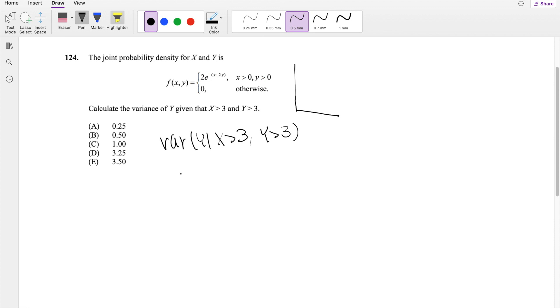And also, we know that for independent functions, f of x, y is equal to f of x, the marginal function of x times the marginal function of y. If we set f of x equal to 1e to the negative x and f of y equal to 2e to the negative 2y, we know that when you multiply f of x times f of y, you do indeed get 2e to the negative x minus 2y, which is indeed equal to f of x, y. So we know that x and y are independent variables.